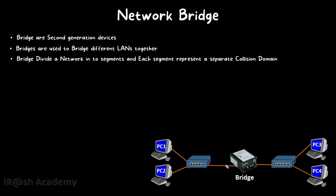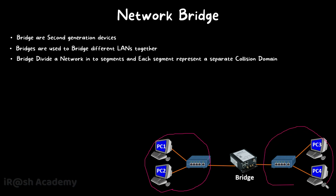When there is no bridge and two hubs are used together, the entire network is a single collision domain. The function of the bridge is to divide that single collision domain into two different collision domains — Collision Domain 1 and Collision Domain 2. Collision Domain 1 is shared between PC1 and PC2, and Collision Domain 2 is shared between PC3 and PC4.